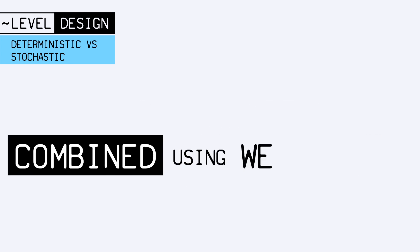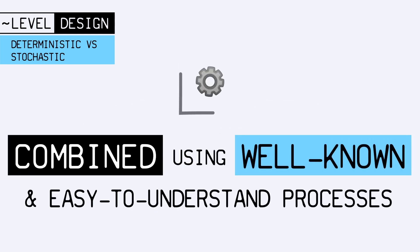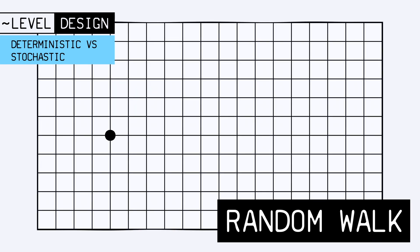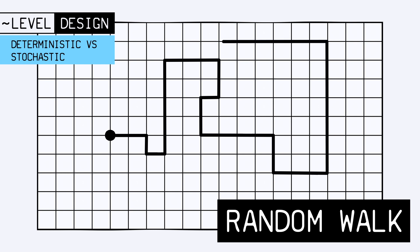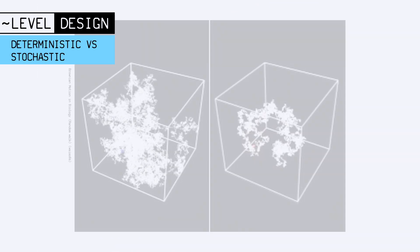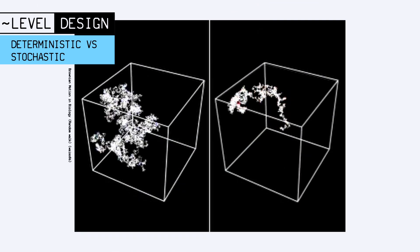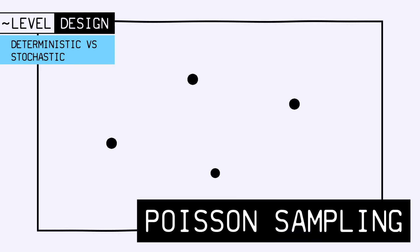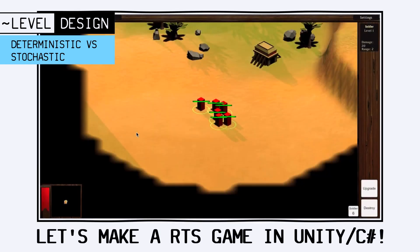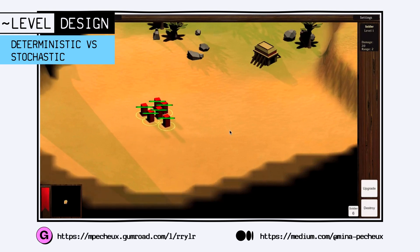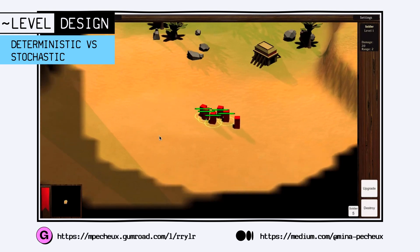Most notably, you have two well-known and easy-to-understand stochastic processes used in game dev. The random walk, where you move step-by-step in a random direction to gradually build a chain of points — that's typically interesting to make simple city maps, but it's also used in physics to model movements in liquids or gases, or in maths for population dynamics. And a Poisson process that can create random but pretty well-distributed points. This is actually the tool I've used in my RTS tutorial series to find random positions for units when you select a group of them and ask them to move somewhere on the map.